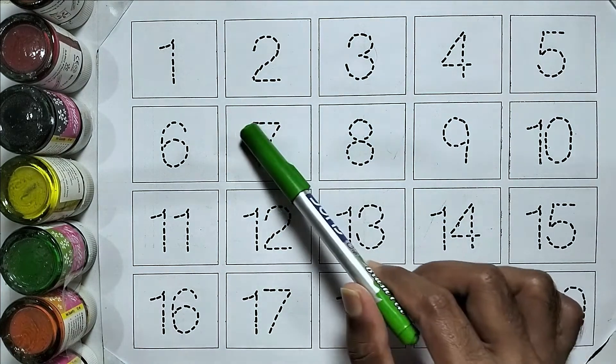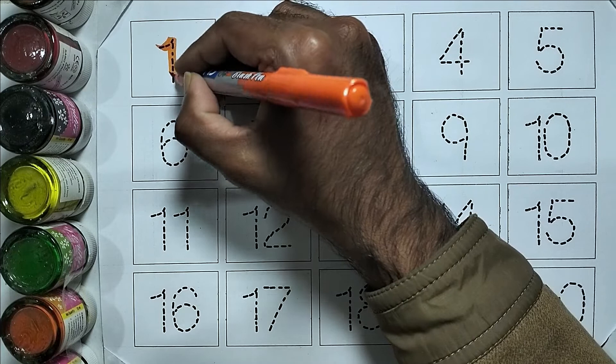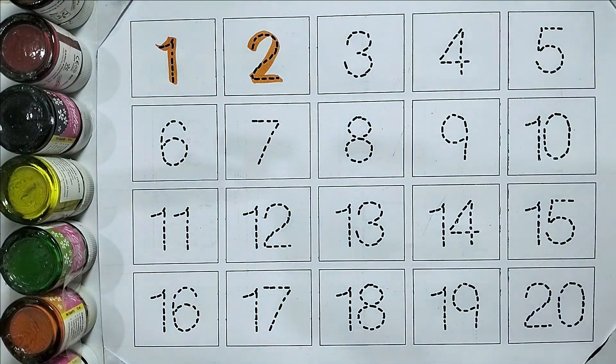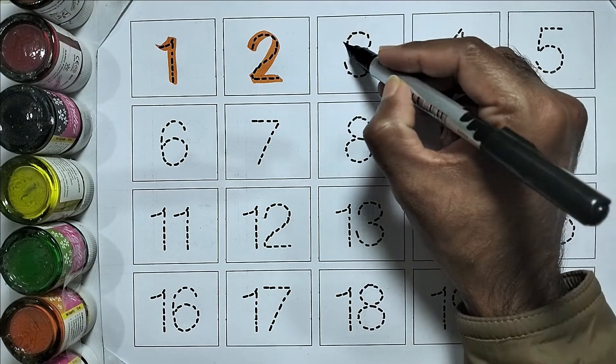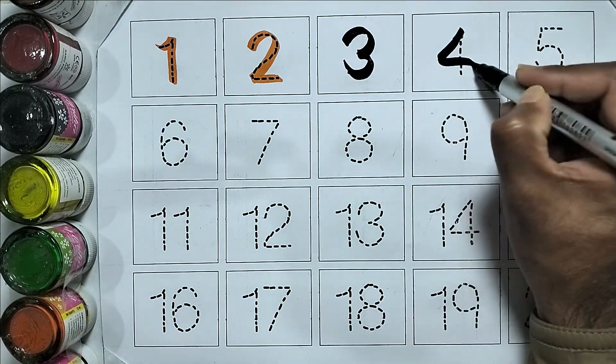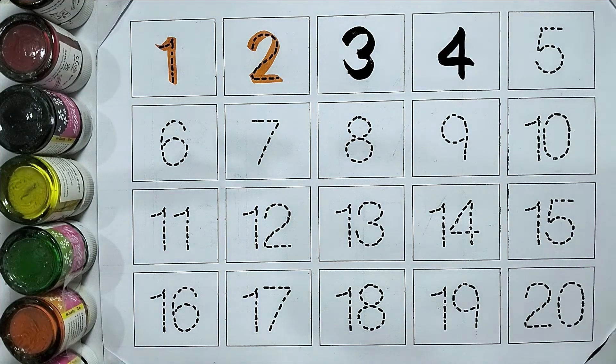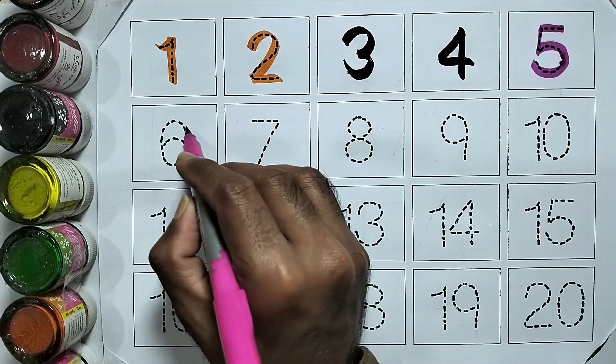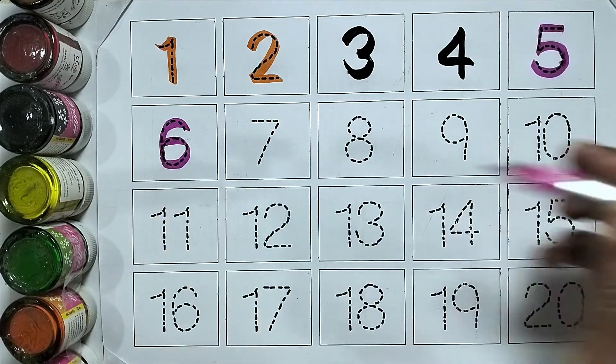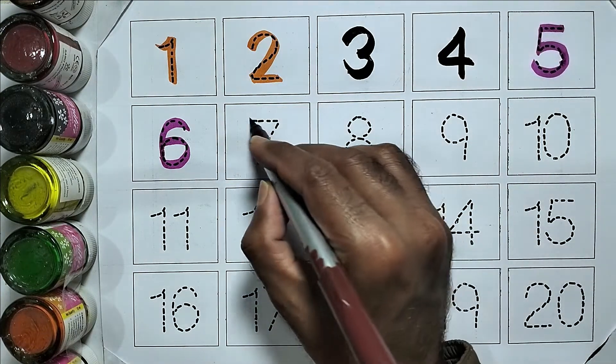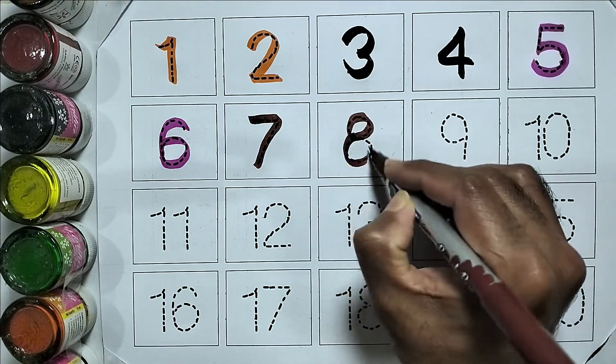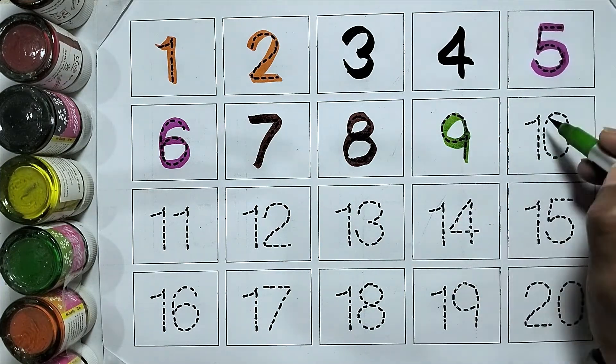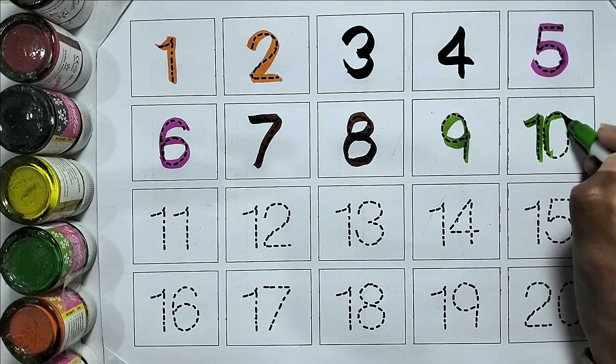Sea green color. One, two, three, four, five, six, seven, eight, nine, ten.